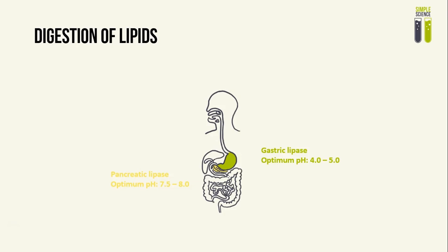Next, with the digestion of lipids, there is first of all the gastric lipase enzyme. Its optimum pH is 4.0 to 5.0. This lipase is very special because it is an acidic lipase, which means that it does not require bile acids or bile salts for optimal enzymatic activity, unlike the alkaline lipase secreted in the pancreas. Then we have the pancreatic lipase, which has an optimum pH of 7.5 to 8.0. It is secreted into the duodenum, and it breaks down lipids into fatty acids and glycerol after the bile salts have worked on the lipids to break them down into smaller lipid pieces.